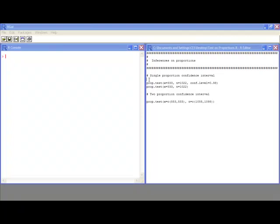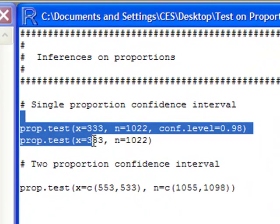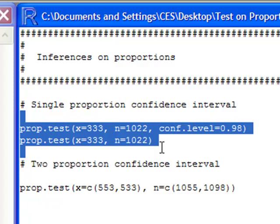The first thing we need to know is the prop.test function. In the code over here, you'll see prop.test. The first number, x, is the number of successes in our sample, and n is the actual sample size.